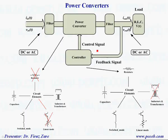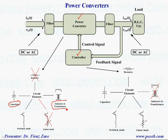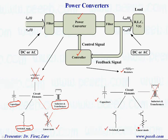Looking at the block diagram, the power electronics system consists of a power converter that processes the power, and this converter is controlled by a controller. The circuit elements within the power converter consist of capacitors, magnetic elements like inductors or transformers, and transistors operating in switch mode. In the control circuit, because efficiency is not a big issue, we have elements like resistors, capacitors, and transistors operating in switch or linear mode.